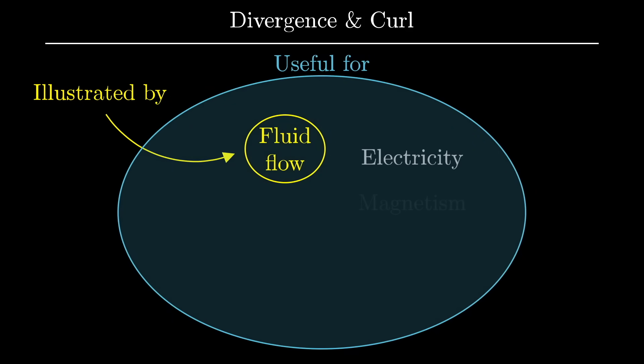For example, the ideas of divergence and curl are particularly viscerally understood when the vector field is thought of as representing fluid flow, even if the field you're looking at is really meant to describe something else, like an electric field.